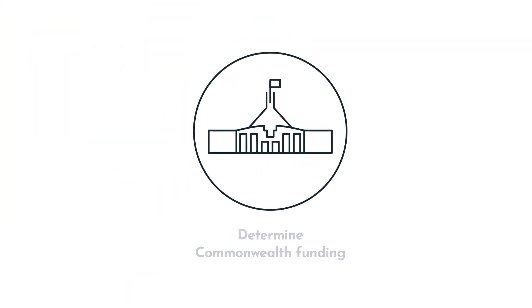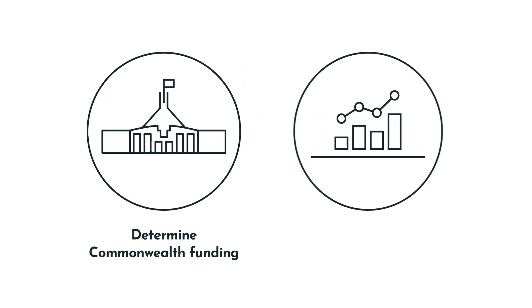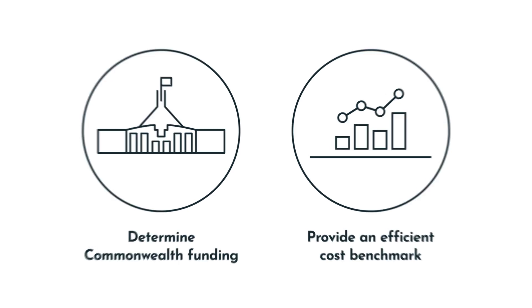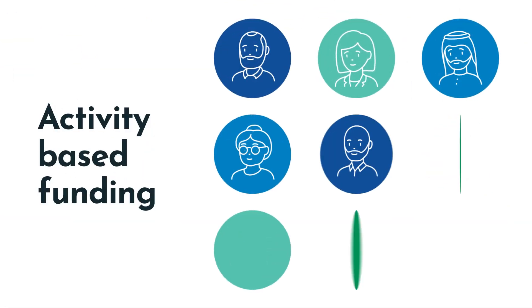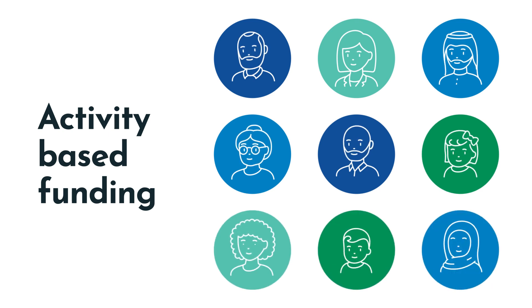The National Efficient Price has two key purposes: to help determine the level of Commonwealth Government funding for public hospital services, and to provide a benchmark for the efficient cost of providing these services. This is done through the implementation of activity-based funding, which is a way of funding public hospitals for the number and mix of patients they treat.